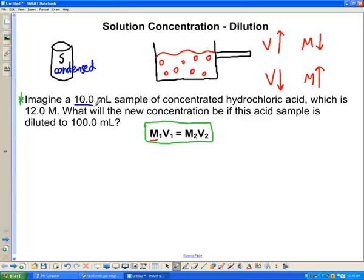Let's make sure we understand the question and pick out the important points. Well, we have a volume here, we have the word concentrated but that doesn't really tell us much, although it does tell us that concentration is 12 molar, and that's pretty concentrated. The question is asking what will the new concentration be if this acid sample is diluted to 100 mL.